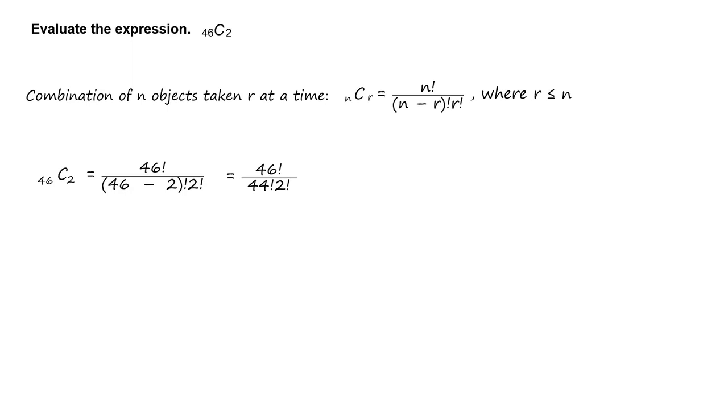Simplify to get 46 factorial divided by 44 factorial times 2 factorial. Rewrite as 46 times 45 times 44 factorial divided by 44 factorial times 2 factorial.